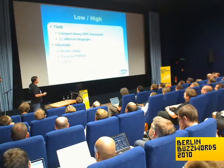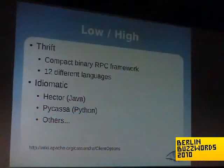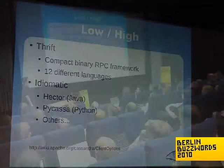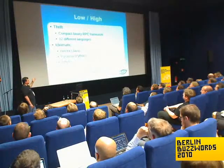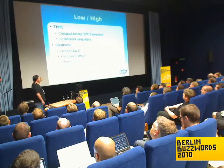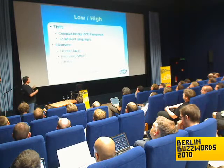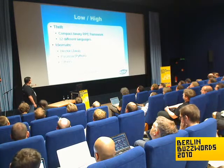Cassandra's API is implemented in Thrift, another Apache project in the incubator. It's a compact binary RPC framework, and the cool thing about Thrift is it supports a lot of different language environments. We tend more and more to push people towards higher-level idiomatic client libraries that abstract all the boilerplate away. There are a couple of really good ones emerging: Hector for Java and Pycassa for Python are both shaping up nicely. There's a link at the bottom of the slide with the most comprehensive list.